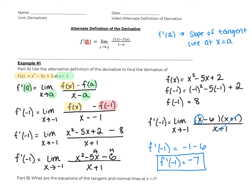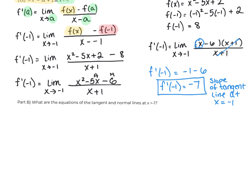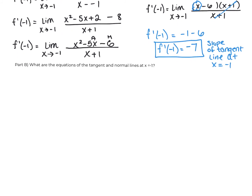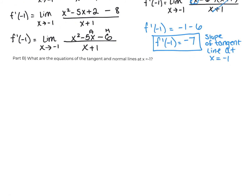That gives us the slope of the tangent line at x equals negative one. Moving on, part B asks: what are the equations of the tangent and normal lines at x equals negative one?